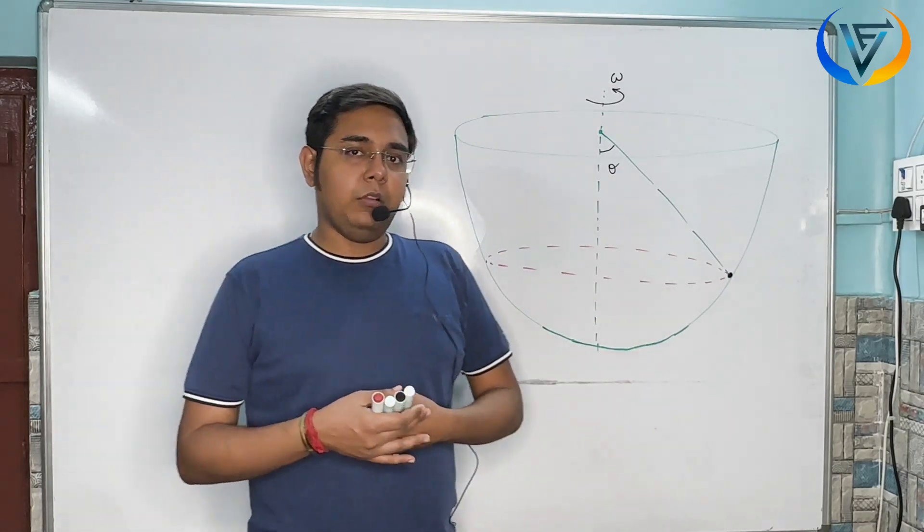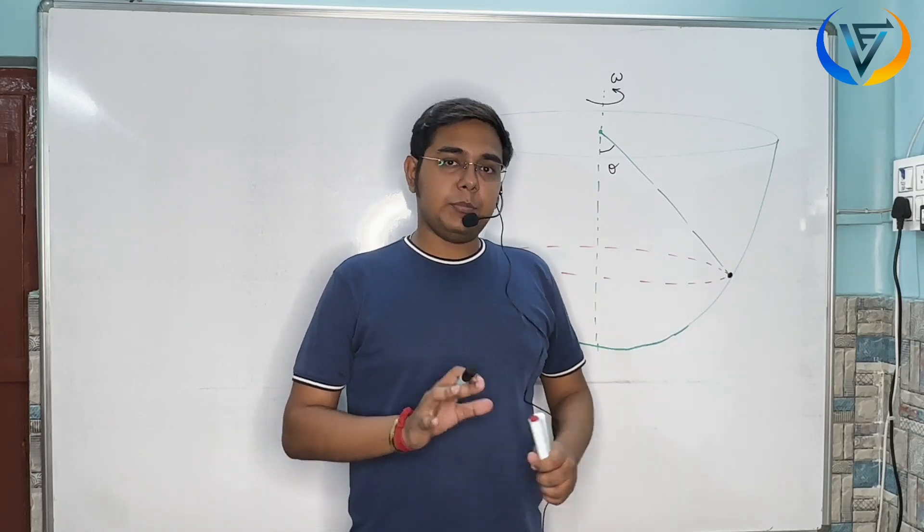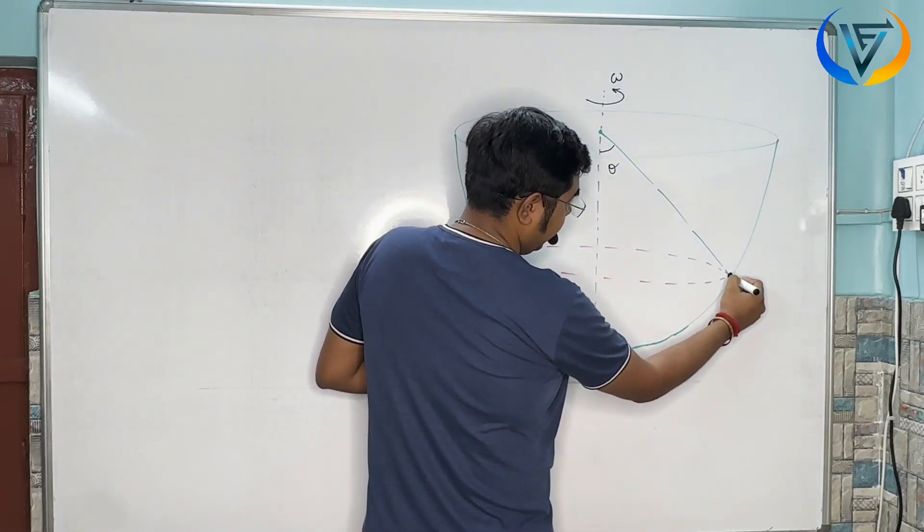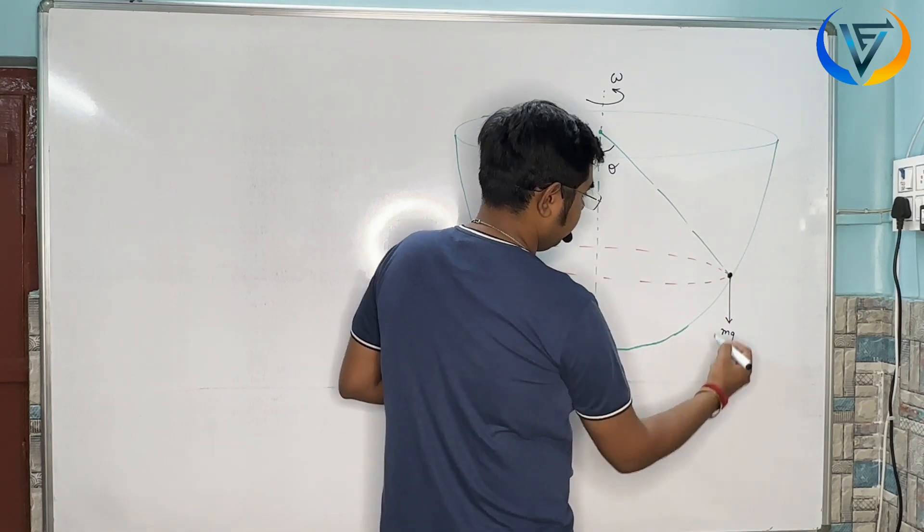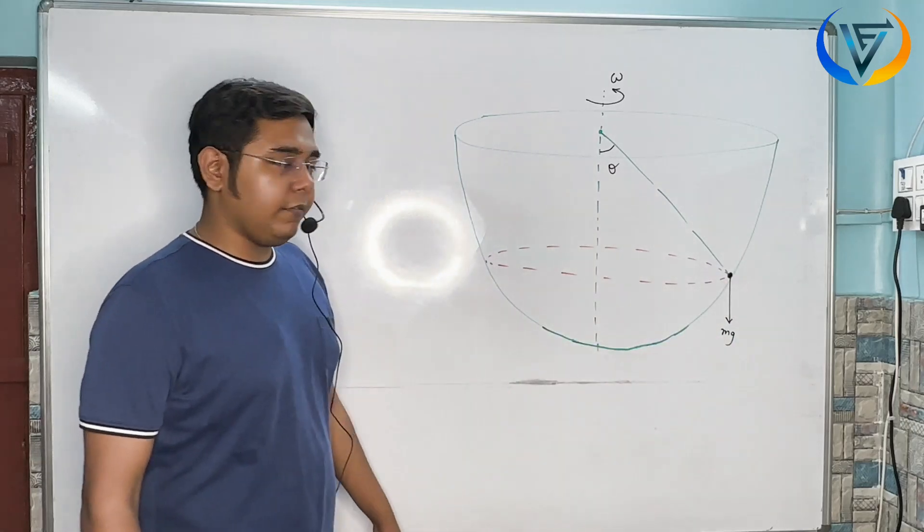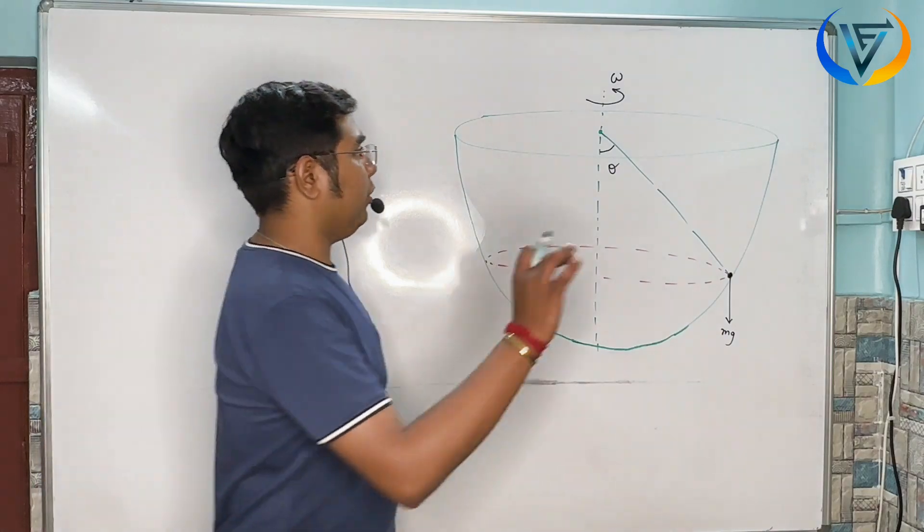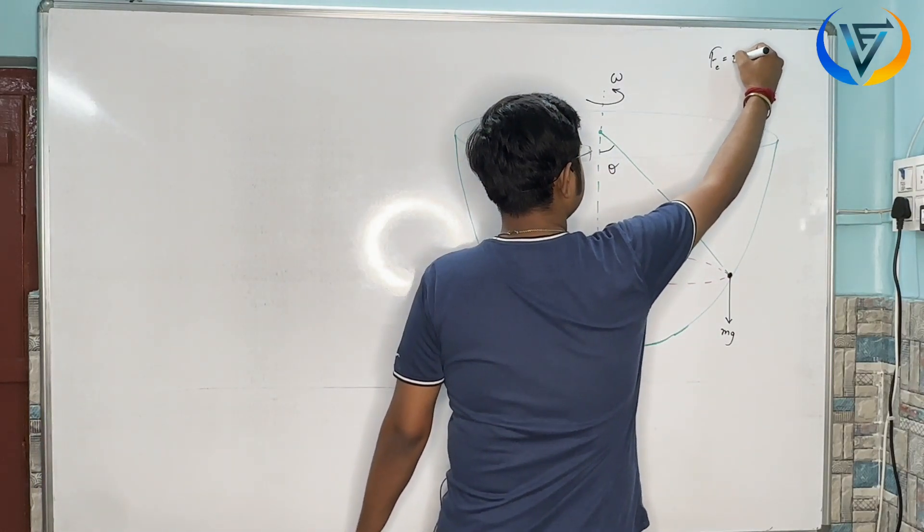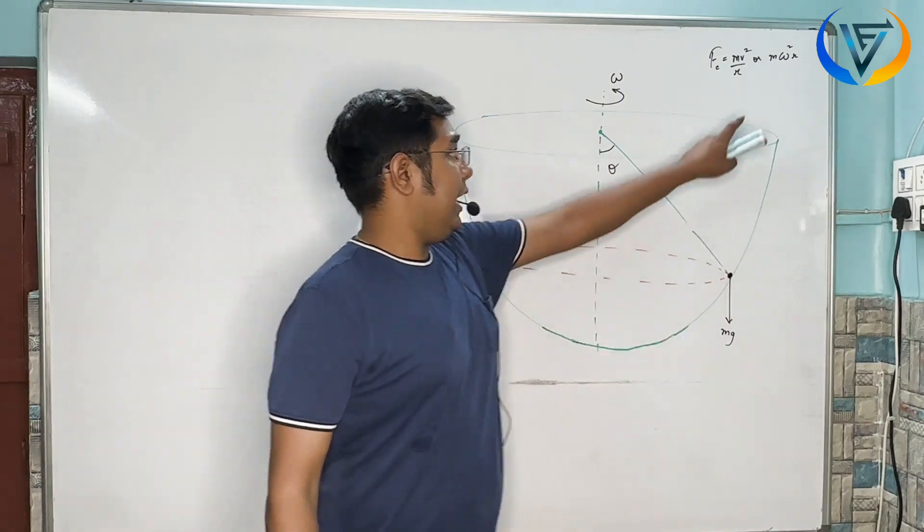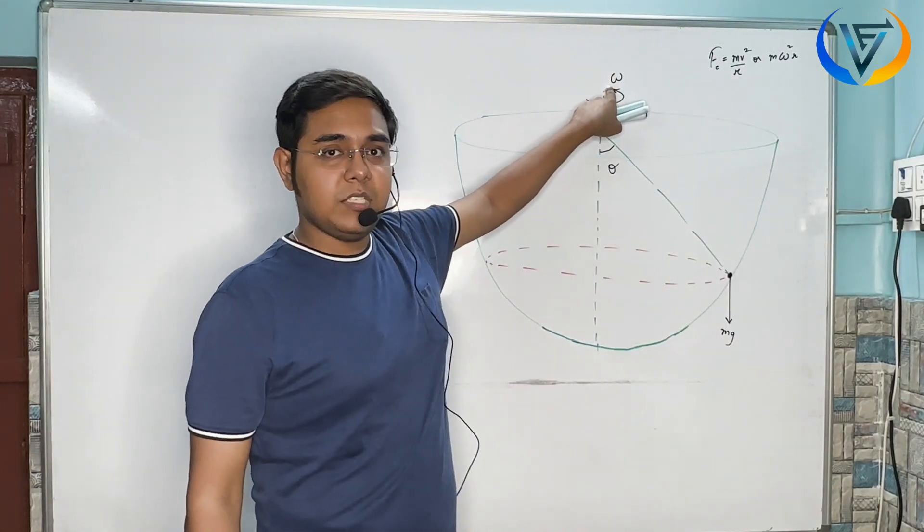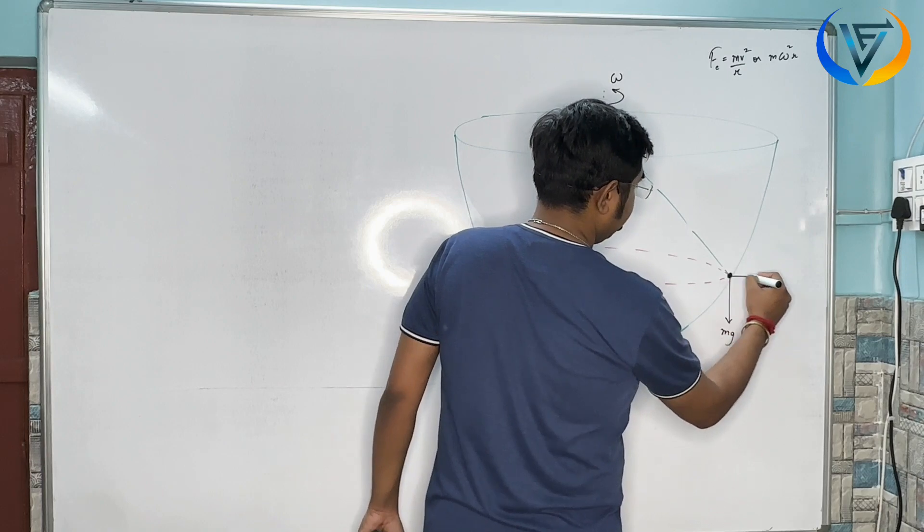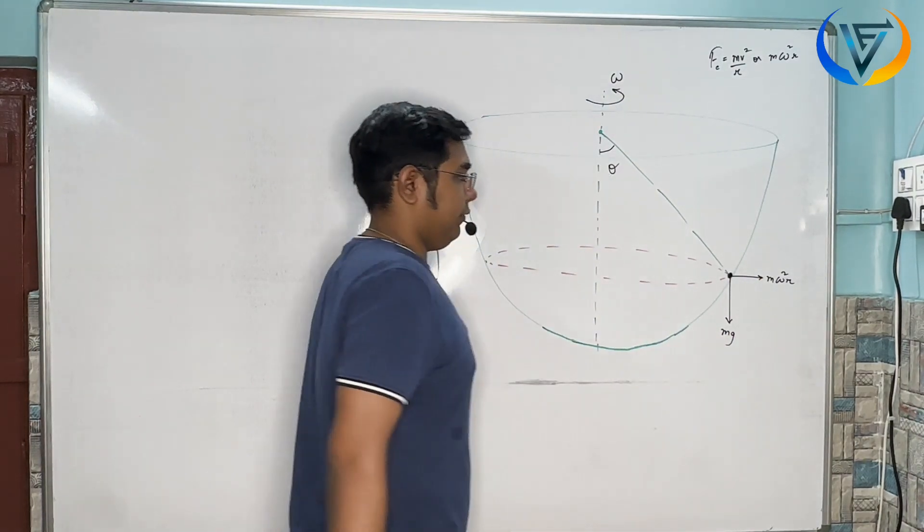If the bob is in equilibrium, the net force is zero. The forces acting on this particular bob are: first, if it has mass M, then weight Mg acts downwards. Second, as it is in circular motion, there is centrifugal force given by M omega squared R, acting radially outwards.